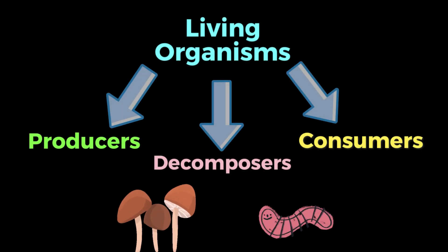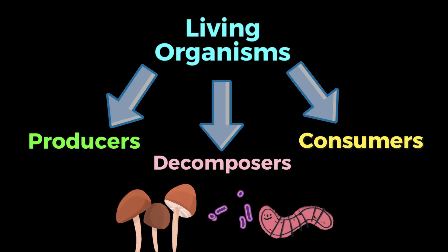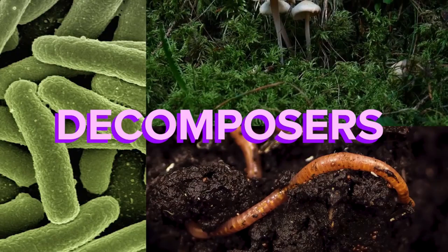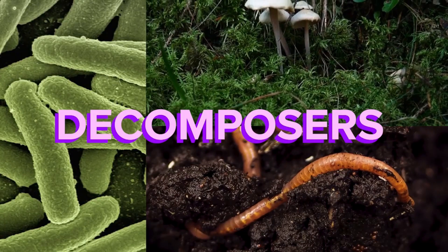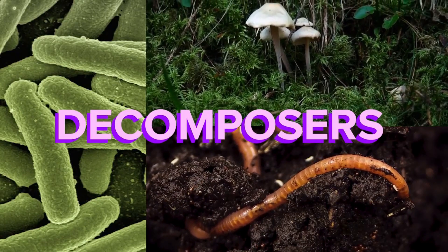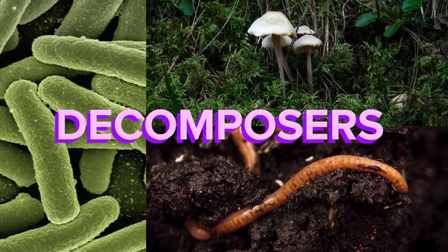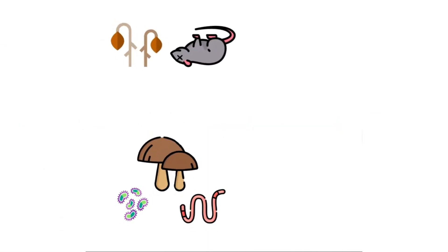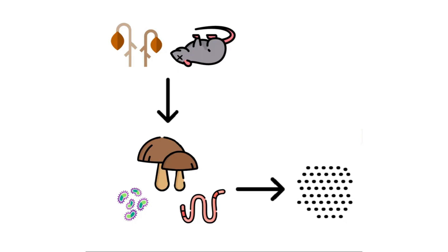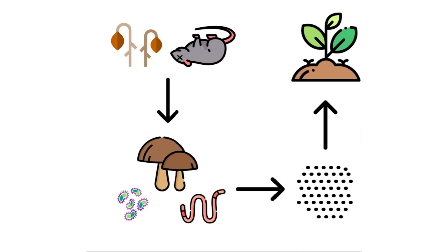Fungi, worms, and bacteria fall into the category called the decomposers. When other organisms die, the decomposers break them down and then turn them into nutrients that go back into the soil, which helps the plants grow.